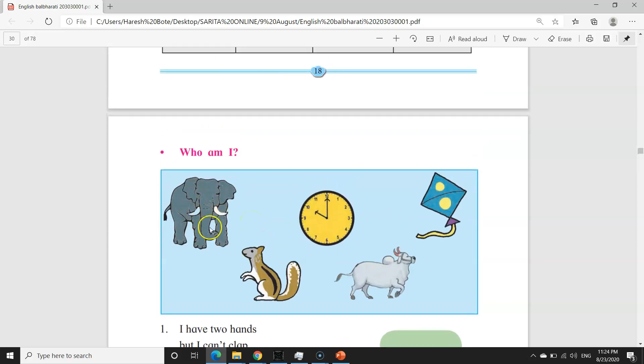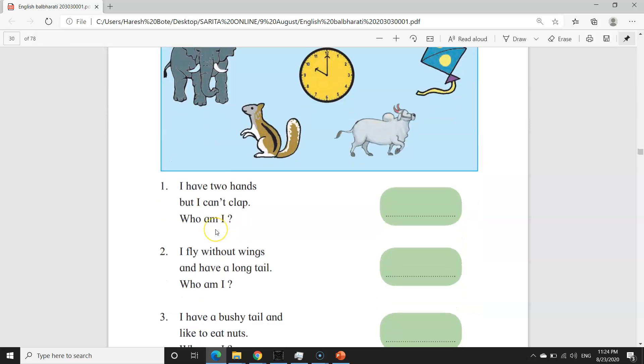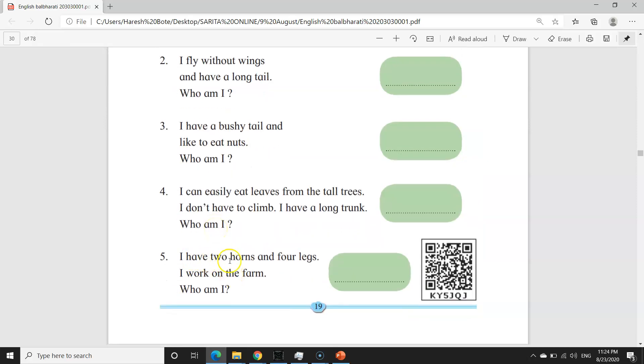Sond konthya prani la asthe varo? Hatti Elephant. The answer is elephant. Fifth. I have two horns, horns manzhe shinga, and four legs, legs manzhe paye. Mala don shinga aahet aani char pai aahet. I work on the farm. Mi sheta var kaam karato. Who am I? Kone aahe mi?